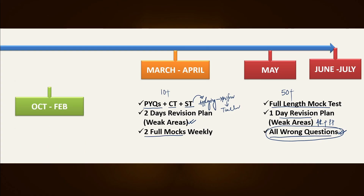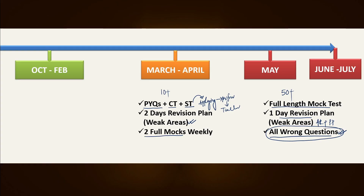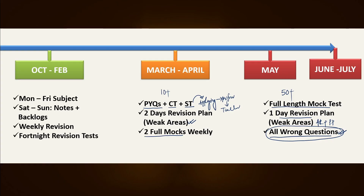From October to February is the most important phase. If you are planning for 2026, you should also appear in this year's CGL for the experience, then start your journey from 1st October. From Monday to Friday, only focus on subject-wise syllabus completion. From Saturday to Sunday, focus on notes and clearing backlogs. Do not push backlogs to the next week, because if you start pushing backlogs, it will become a mountain and you won't be able to cross it.